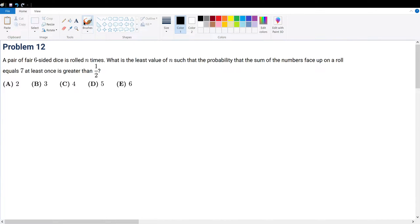Problem 12: A pair of fair six-sided dice is rolled n times. What is the least value of n such that the probability that the sum of the numbers face up equals 7 at least once is greater than 1 over 2? Let's digest this question step by step, as it tells you what you need to know.